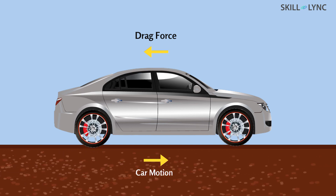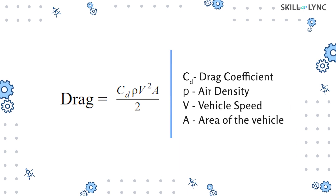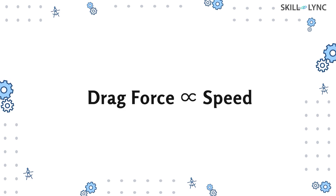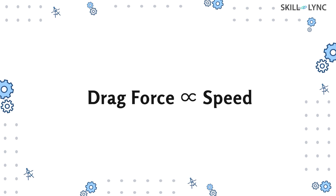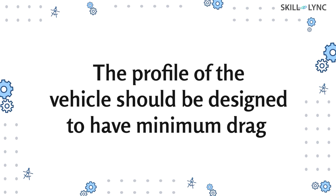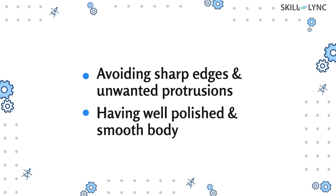Drag is the resistance force that acts against the direction of vehicular motion. Drag force can be expressed using the formula: Cd is the drag coefficient of the vehicle, rho is the density of air, v is the speed of the vehicle, and A is the frontal area of the vehicle. With area, density, and drag coefficient being constants for a particular shape and condition, the drag force of a vehicle varies with its speed. At slow speeds the drag will be lesser, and it increases exponentially when the speed increases. Therefore, for achieving high speeds, the profile of the vehicle should be designed to reduce drag — this can be done by avoiding sharp edges, unwanted protrusions, and having the body well polished and smooth.